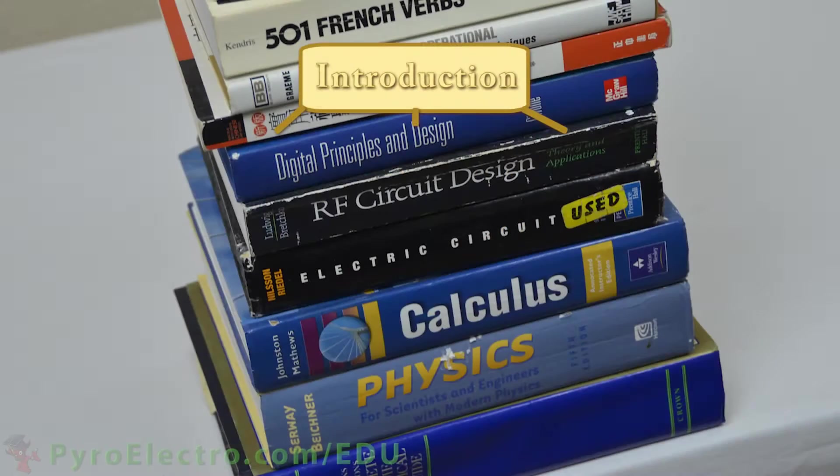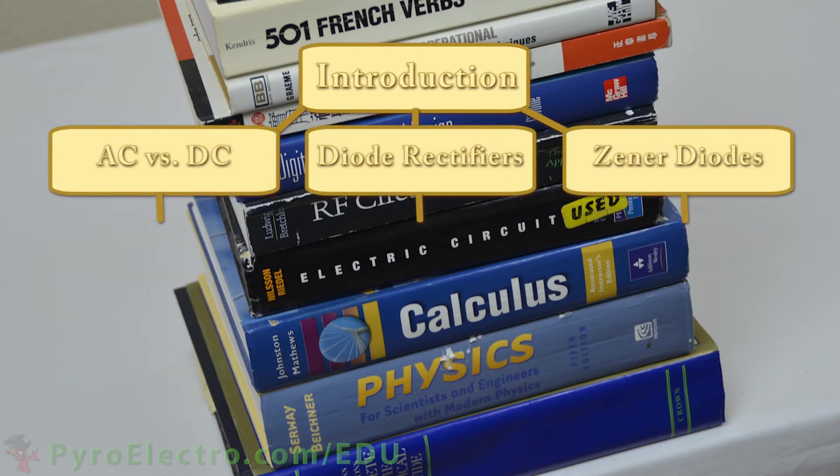This Introduction to Analog Electronics course consists of ten lessons. First, we have this introduction lesson, followed by three lessons covering AC versus DC electricity and different types of diodes.